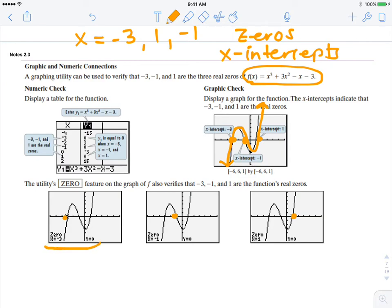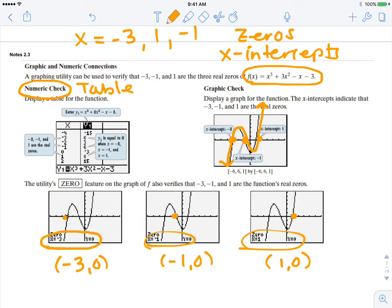When the zero, that would be the ordered pair: negative three, zero; negative one, zero; and one, zero. You can also display on the graphing calculator a table of values. So you can look in your table. Here's your x and your y. And you can find those ordered pairs.